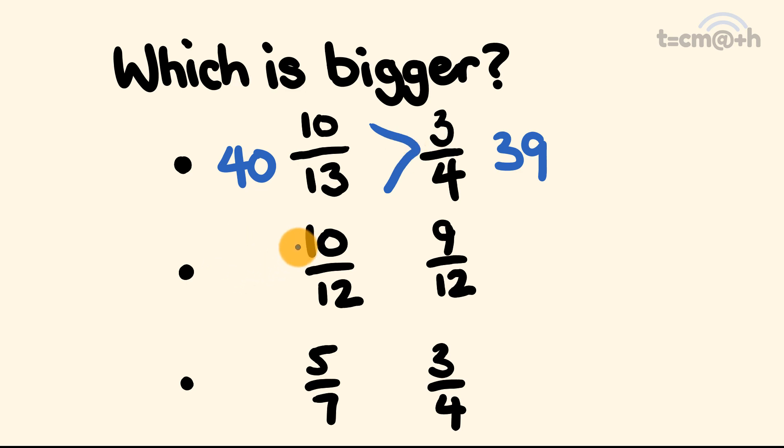Let's have a look at the next pair. We have 10 over 12 and 9 over 12. Now you should be able to do this instantly. Because we have the same denominators, we don't need to go through and work this out any further. We can see that 10 over 12 is bigger than 9 over 12.